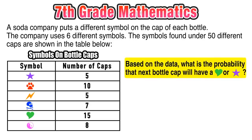We want to express this probability as a fraction. Our numerator is what we want to get: either a green heart or a purple star. Our denominator is all the possible outcomes. In this case, the six different symbols.